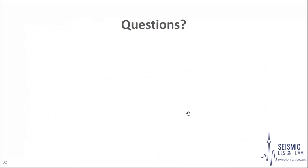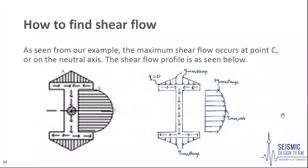Can you explain a bit more about what you mean by shear flow combining at the flanges? Basically, the Q-max in each flange occurs along the vertical axis of symmetry and then it combines — the shear flow essentially adds. What I meant with our thin-wall assumption was that this transition is not actually immediate, but we assume it to be immediate.